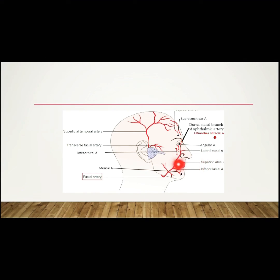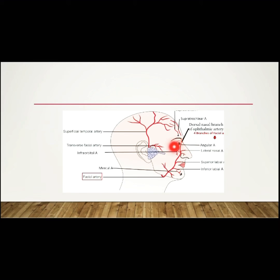The lateral nasal artery supplies the ala and dorsum of the nose, and finally the angular artery, which is the terminal part of the facial artery. This angular artery continues with the dorsal nasal branch of the ophthalmic artery.